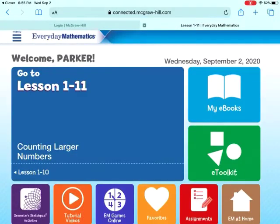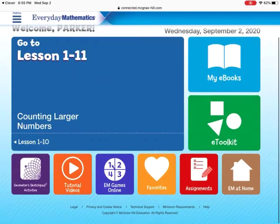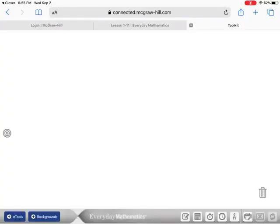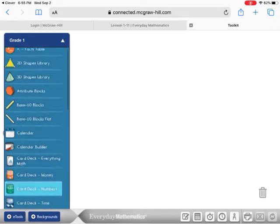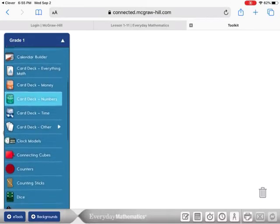Then on this next screen, we're going to go to the green button that says eToolkit. Do you remember what Mrs. Rago used for her game? Yes, she used dice. So we are going to need to click our button in the corner and go down until we see dice.